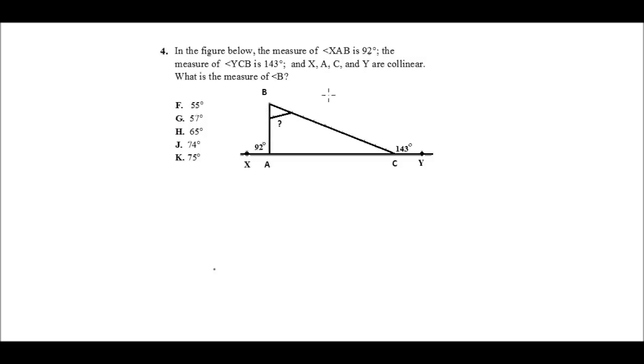So we're looking for this angle right here. All right, well, you probably noticed a couple of things as I was reading the question. One, you've got these two angle measures, and you also have X, A, C, and Y identified as collinear. Collinear just means they're in a line,